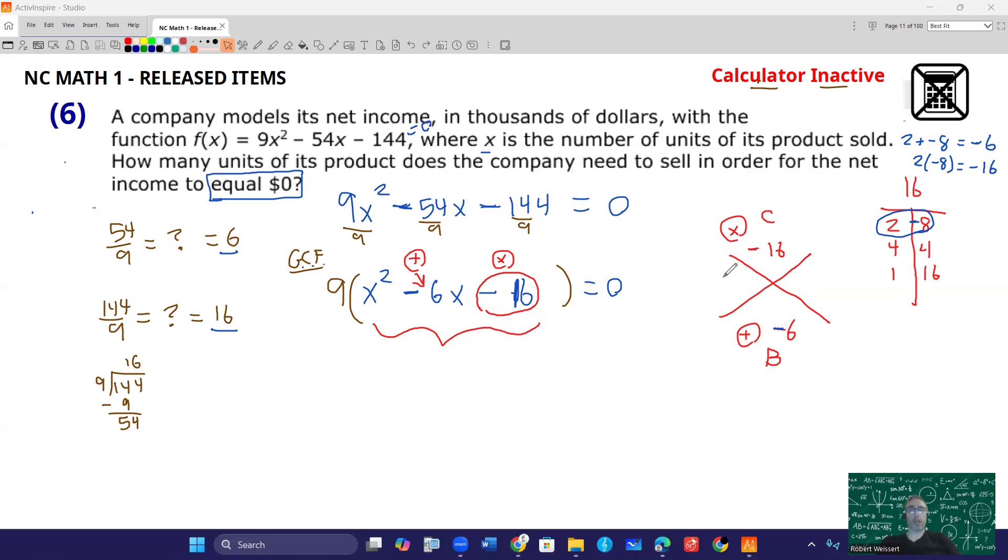So what do I do with those? I look at 2, positive 2, and I look at negative 8 as the numbers in the... I said trinomial, I meant binomial. So I have two factors.